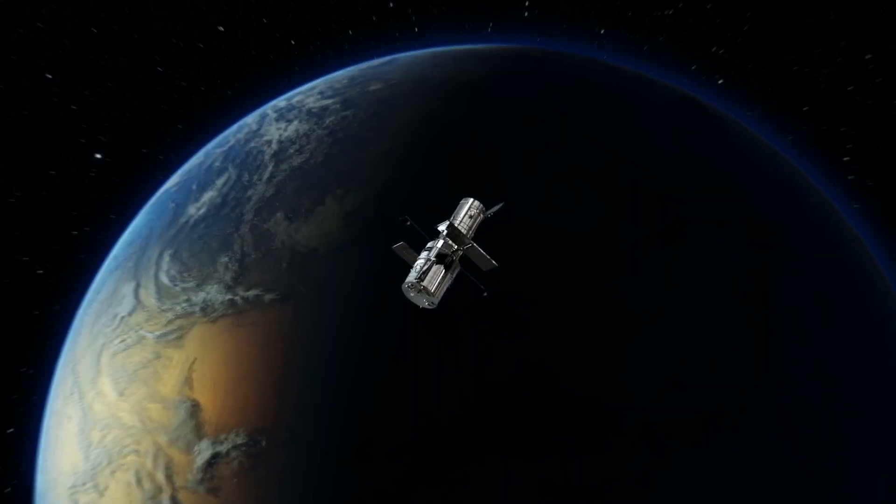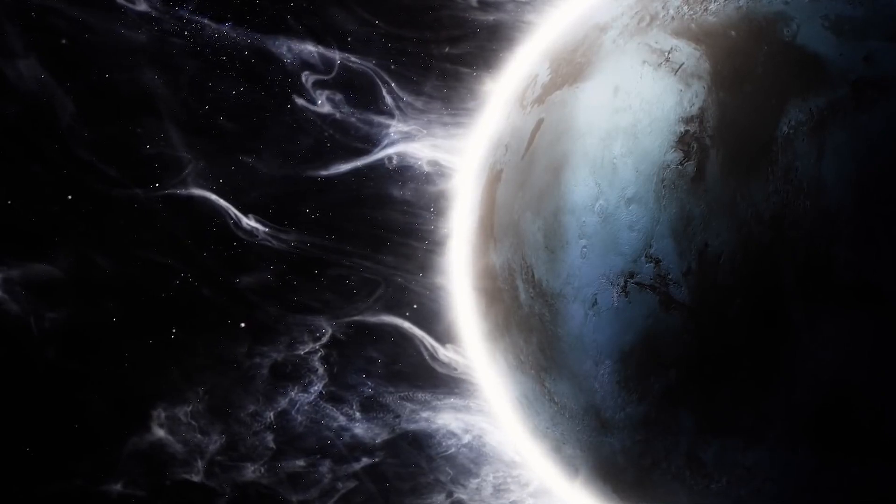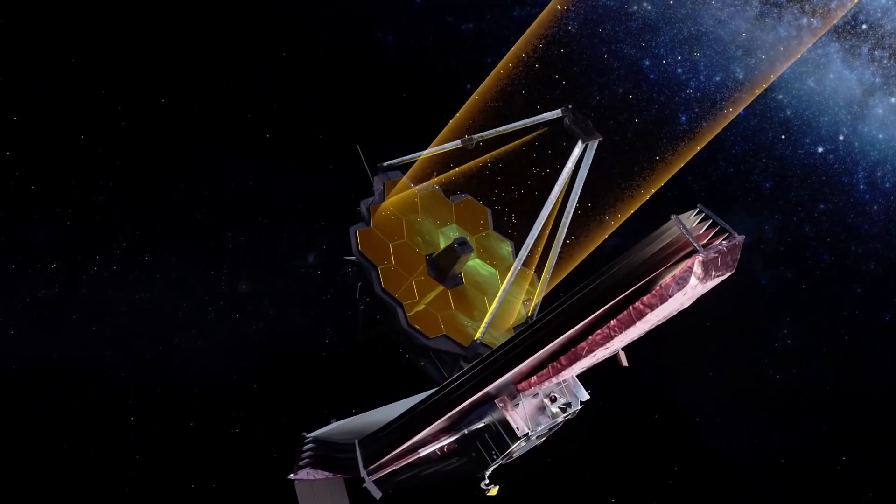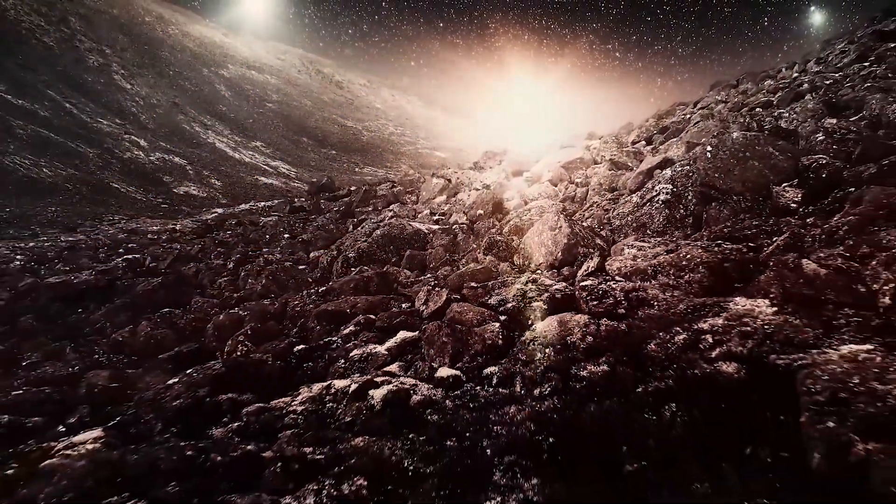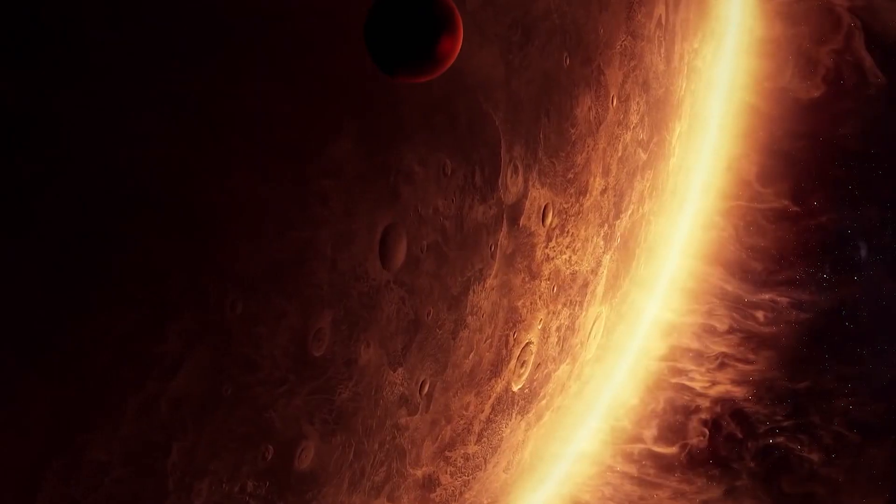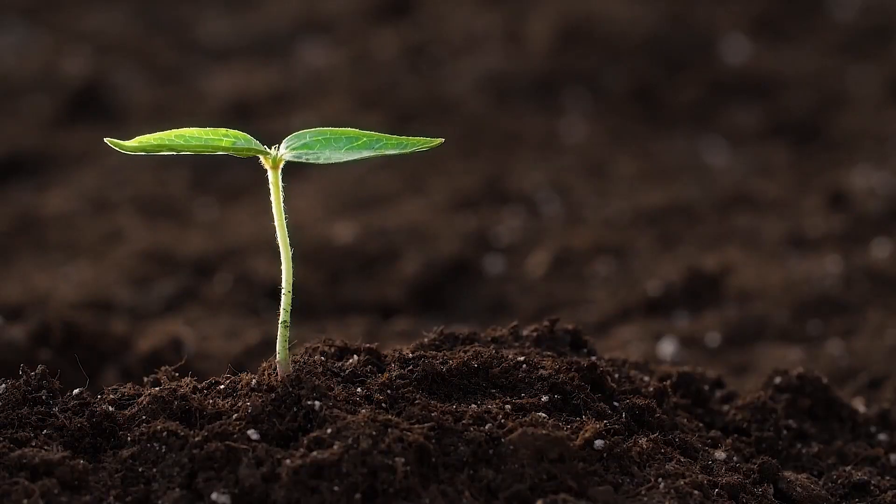Even Hubble wasn't able to accurately discern atmospheric and geological conditions of these planets. But the JWST unlocked the secrets that its predecessors couldn't. A few days ago, NASA researchers came across an exoplanet which had significant quantities of carbon dioxide in its atmosphere.